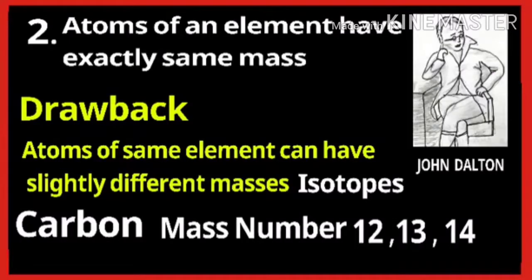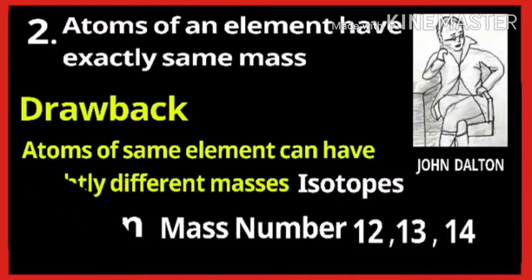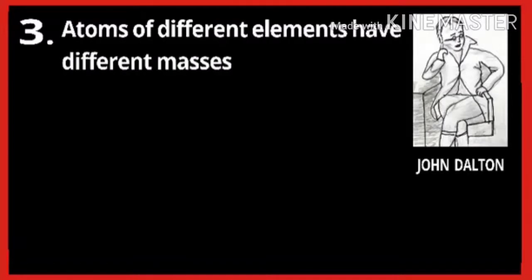For example, carbon has three isotopes with mass numbers 12, 13, and 14. But according to Dalton's second point, the atoms of the same element have exactly the same mass. However, isotopes are atoms of the same element having different masses.